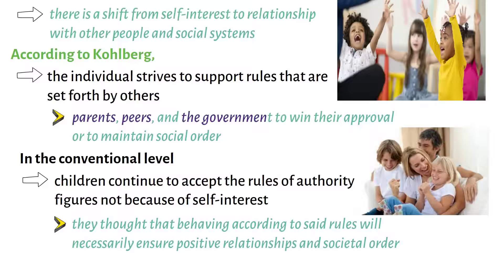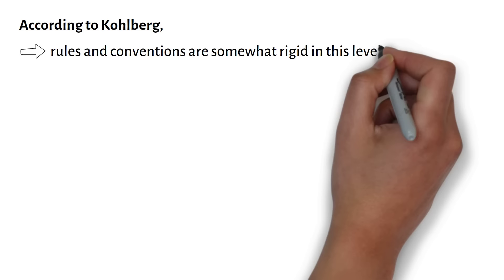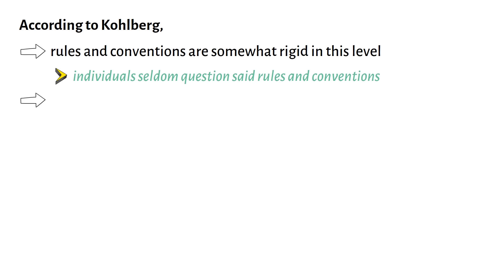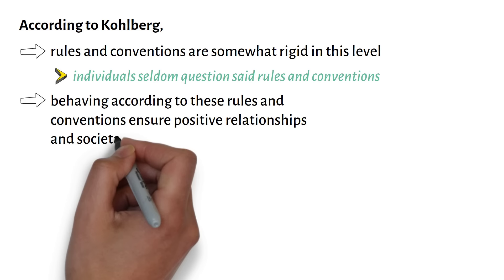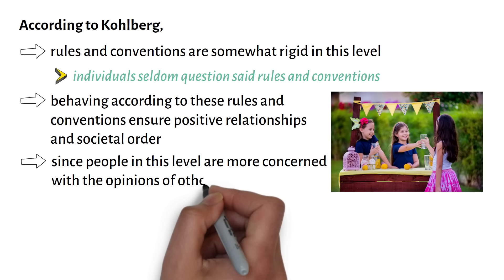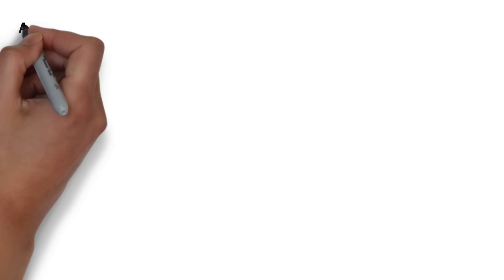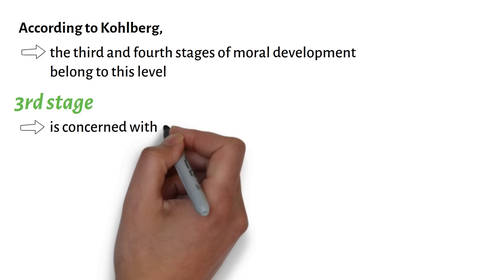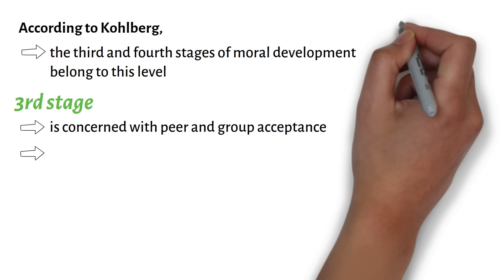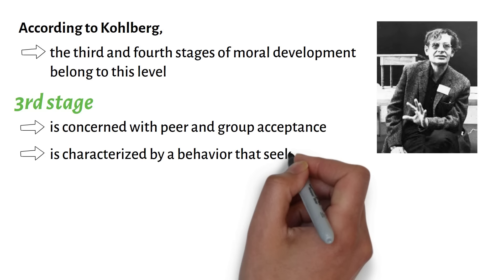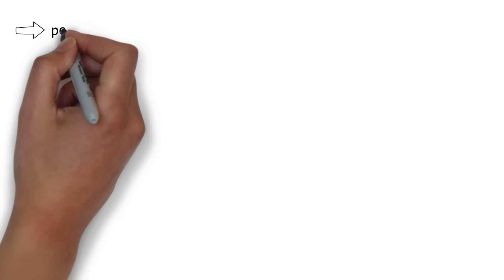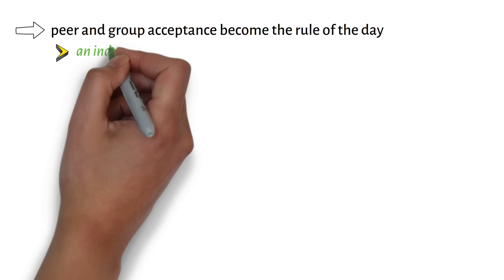According to Kohlberg, rules and conventions are somewhat rigid in this level, but individuals seldom question them, because behaving according to these rules ensures positive relationships and societal order. Since people in this level are more concerned with the opinions of others, moral decisions are made based on what others may say. The third stage is concerned with peer and group acceptance, characterized by behavior that seeks to do that which gains the approval of peers. Peer and group acceptance become the rule of the day, and an individual behaves accordingly to maintain good relationships with others.